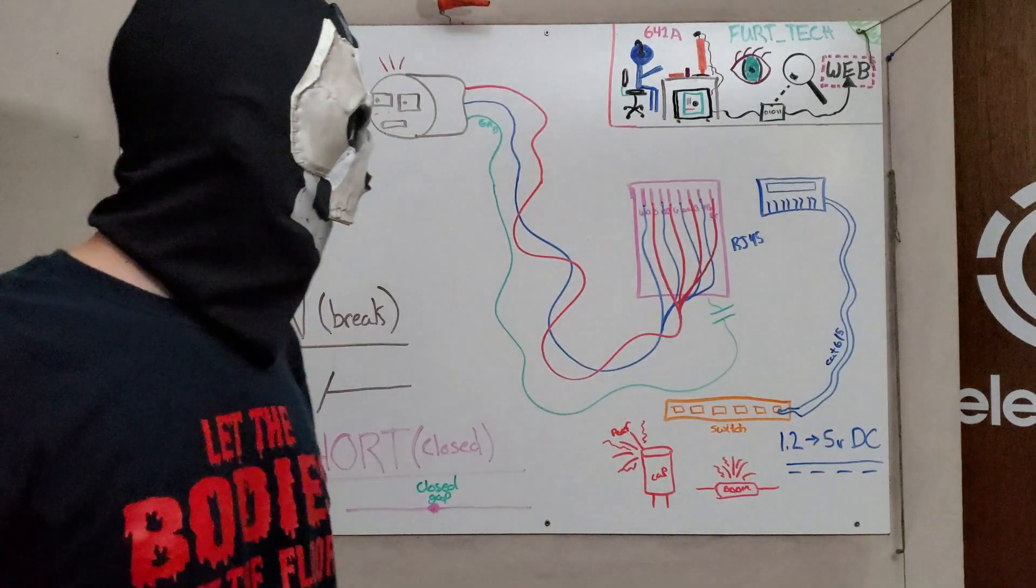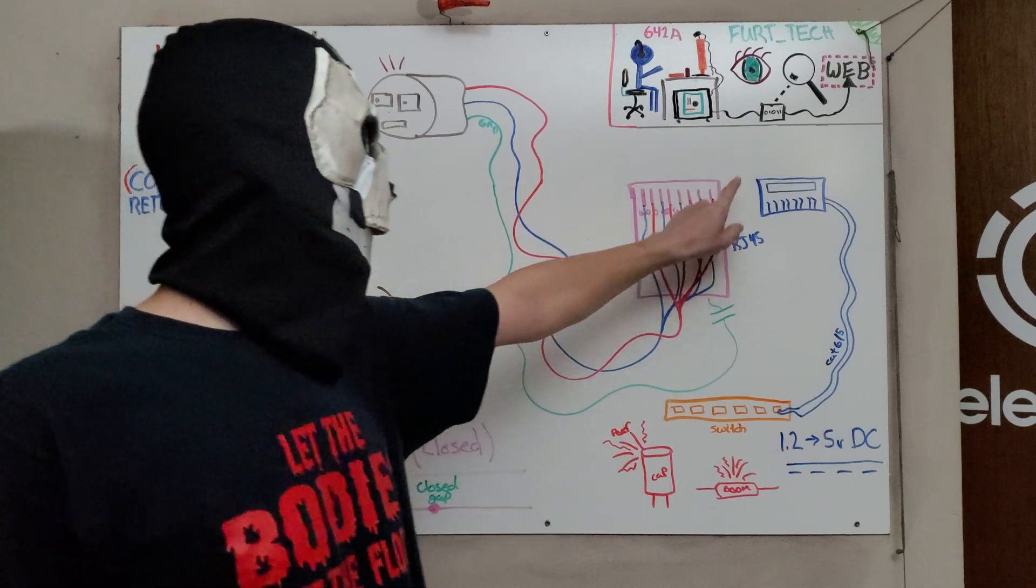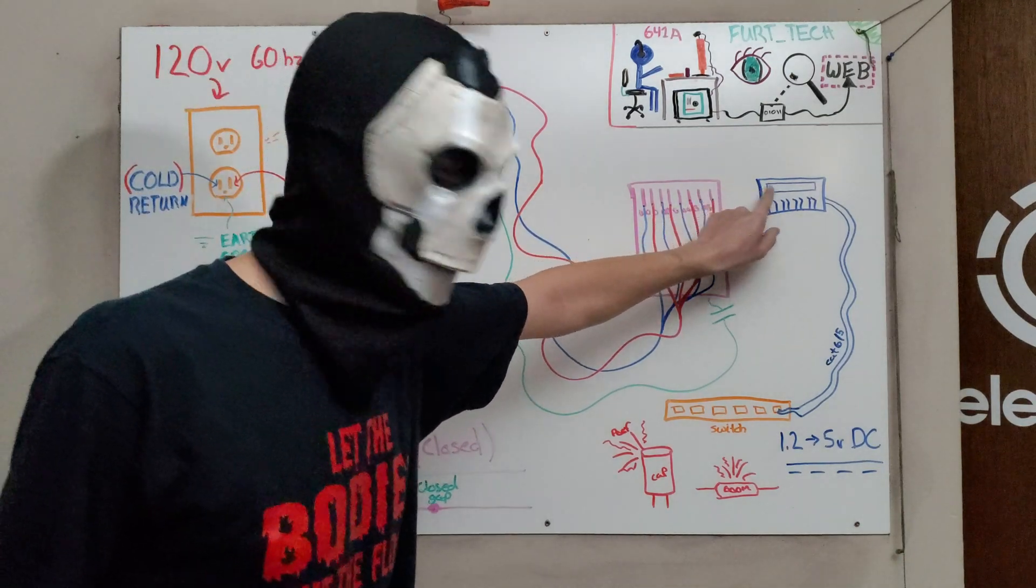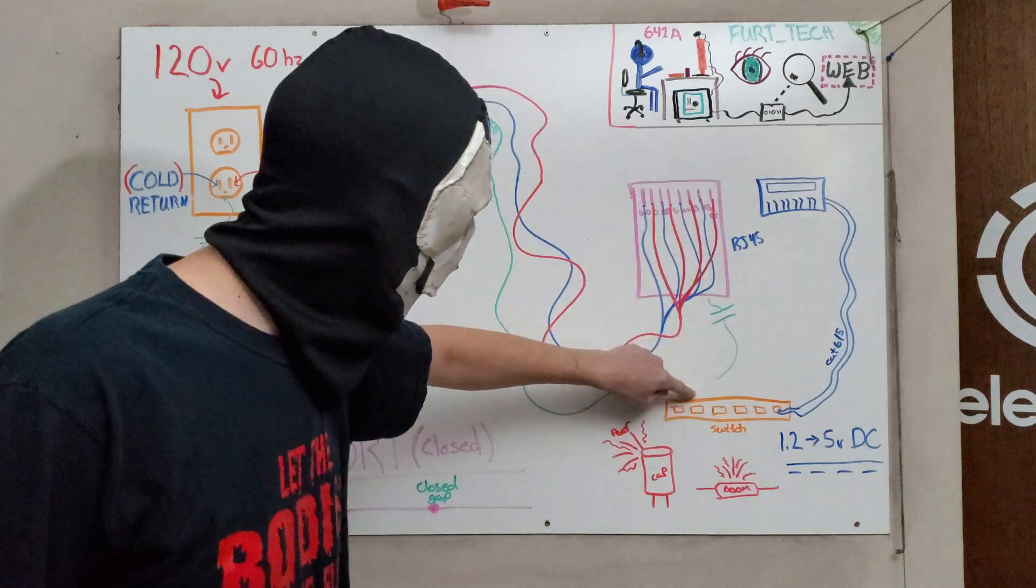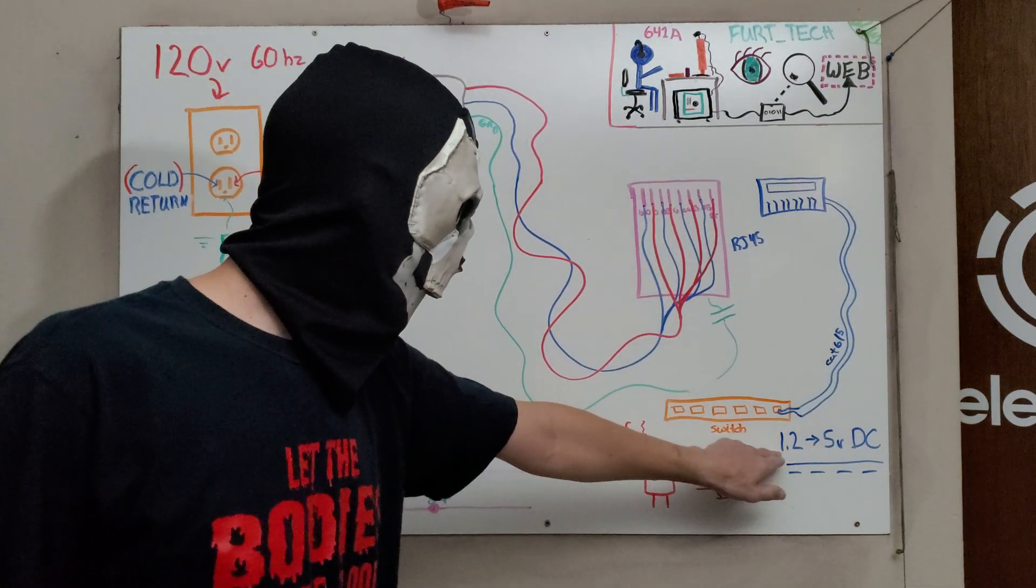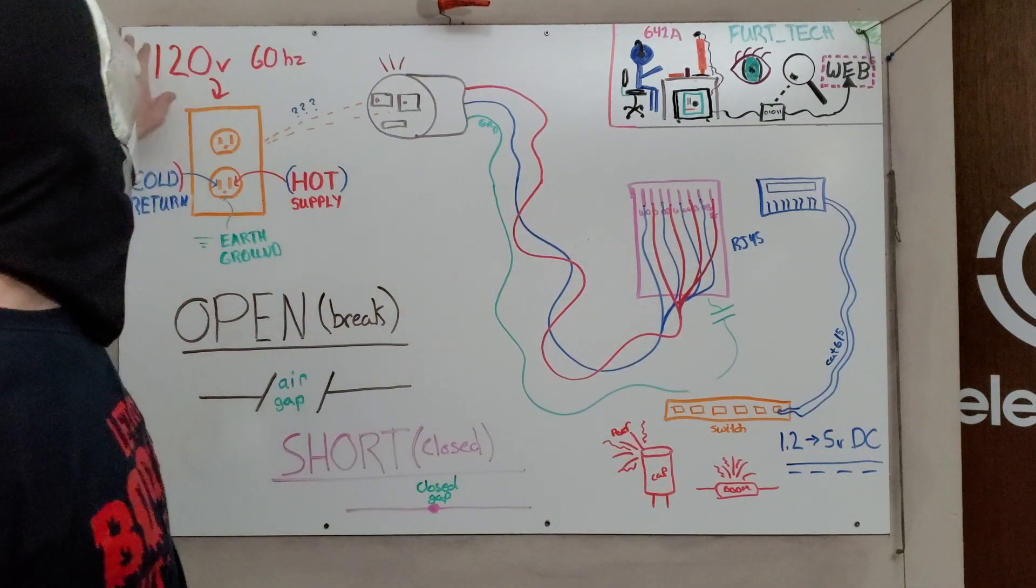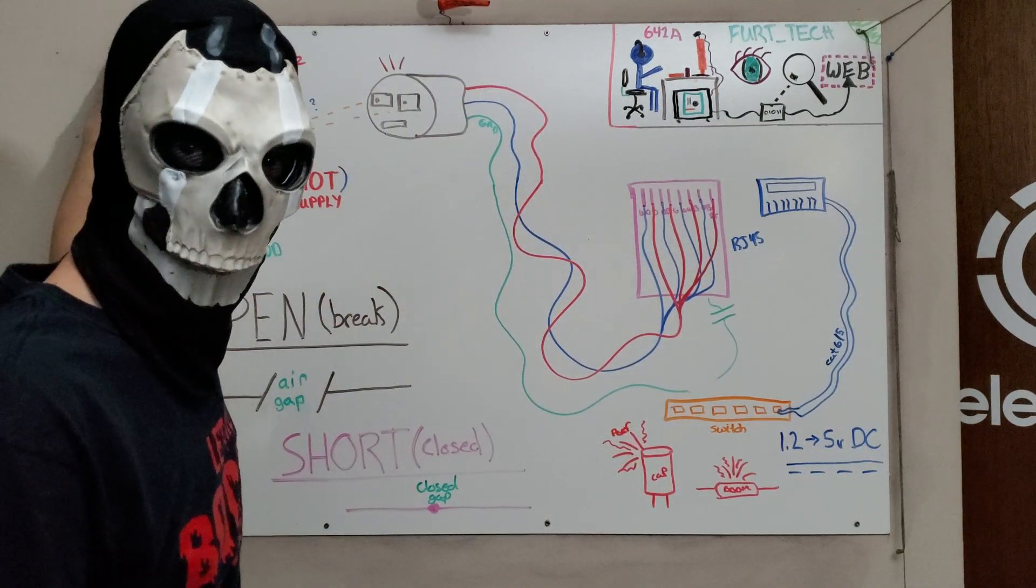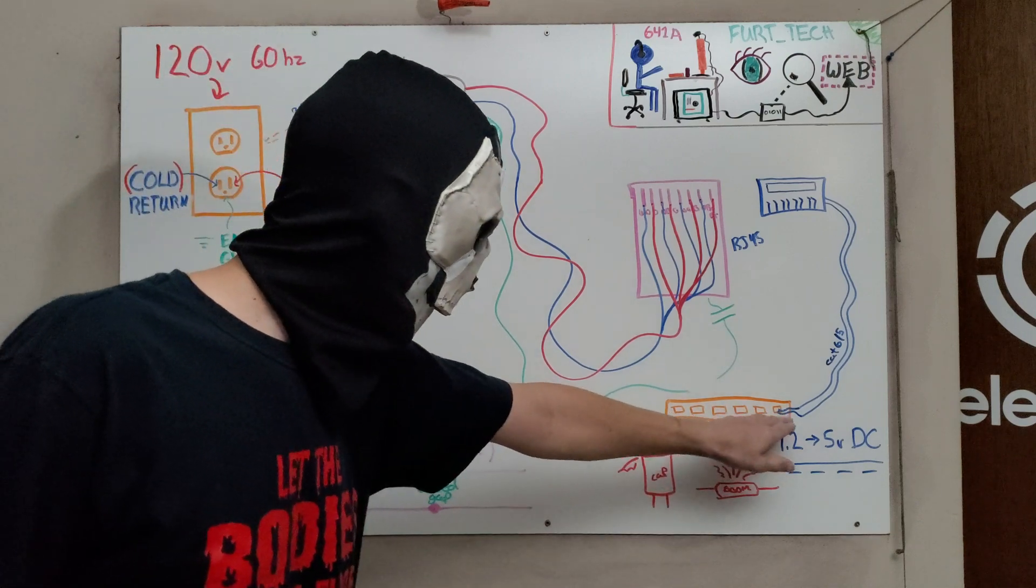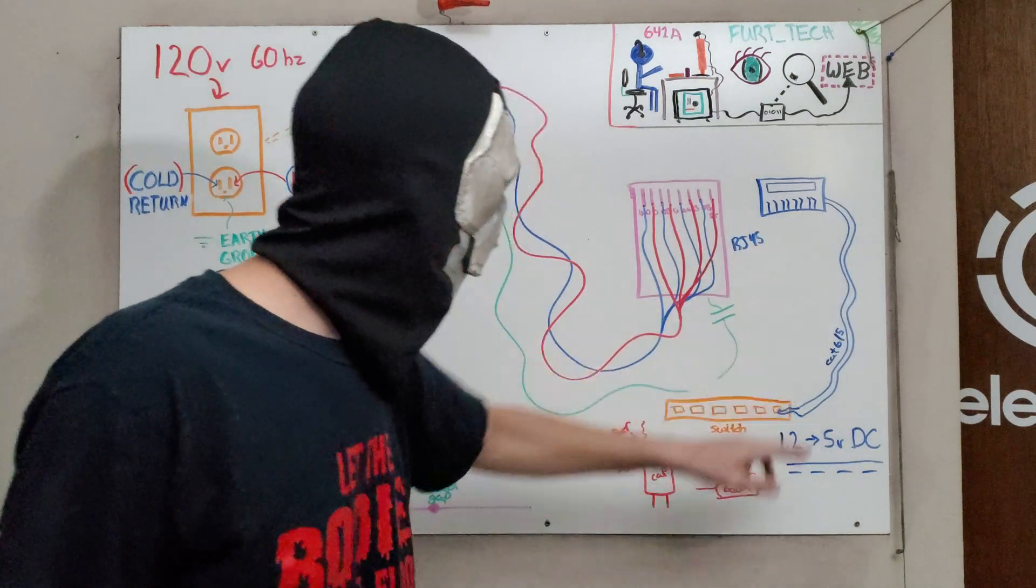Unless you decide to take said RJ45 plug and plug that into an RJ45 jack, which then runs back to a switch, and you're going to have some magic smoke. Now, the reason why is because that switch is designed to run at about 1.2 to 5 volts DC, and suddenly you've now injected 120 volt AC into an RJ45 port on the switch via the Cat5 cable.